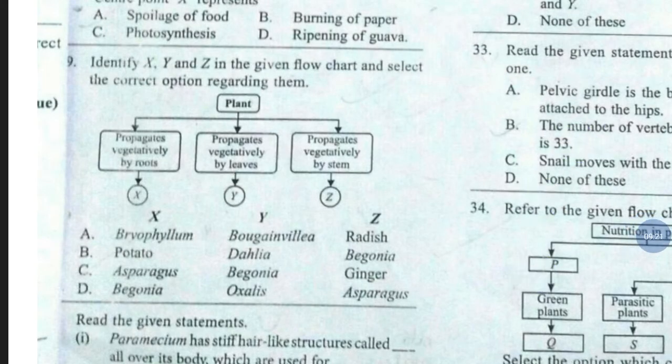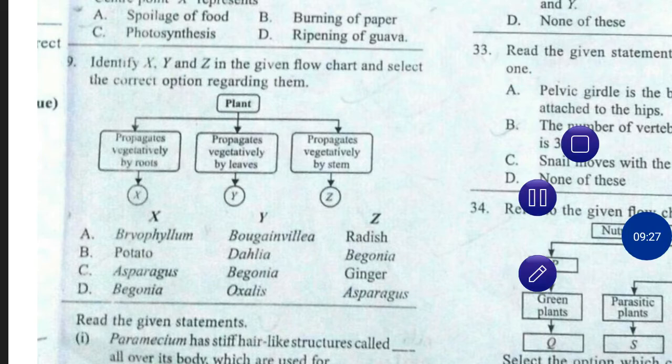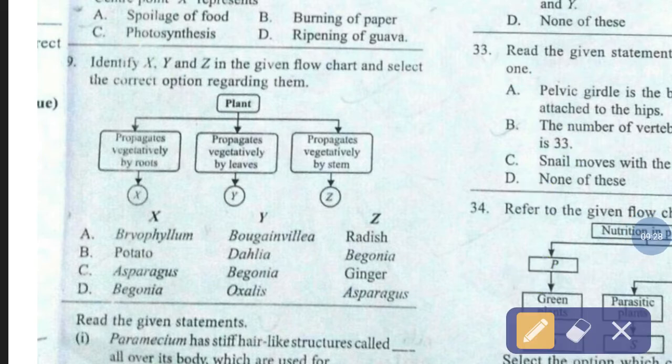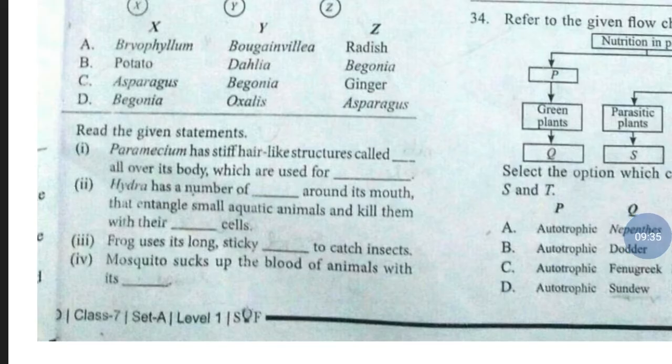Question number 29. Identify X, Y and Z in the given flow chart and select the correct option regarding them. The correct answer is option number C — X: asparagus, Y: begonia, Z: ginger.